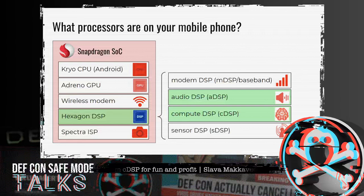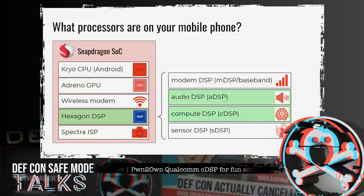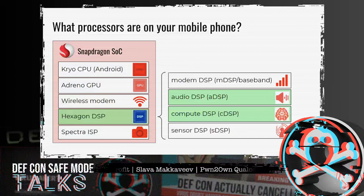Snapdragon product tiers are differentiated by scalable computing resources for the CPU, GPU and DSP. The lowest tiers might contain only a single Hexagon DSP, whereas the premium tier contains up to four Hexagon DSP processors dedicated for specific use cases — modem DSP, audio DSP, compute DSP, and sensor DSP. In this research, I turned my attention to the ADSP and CDSP subsystems.